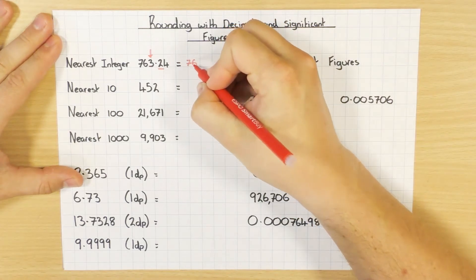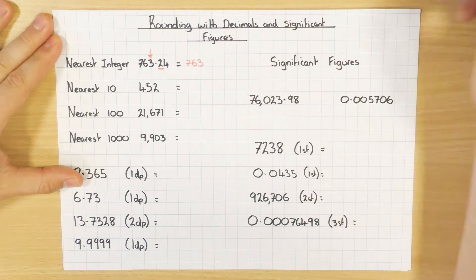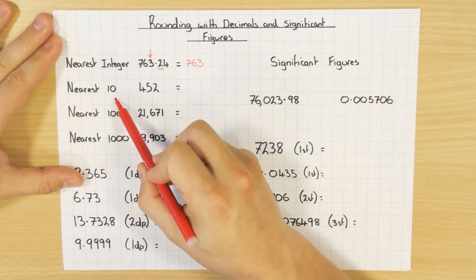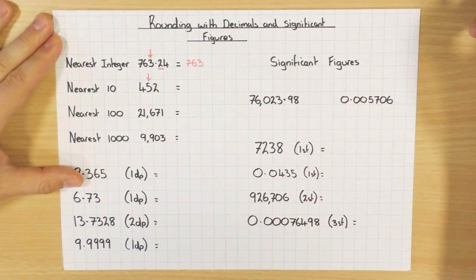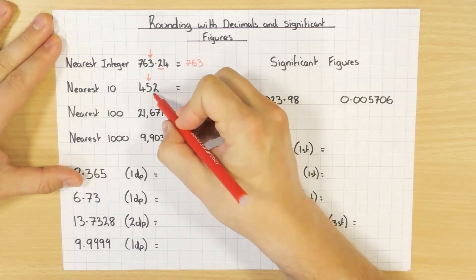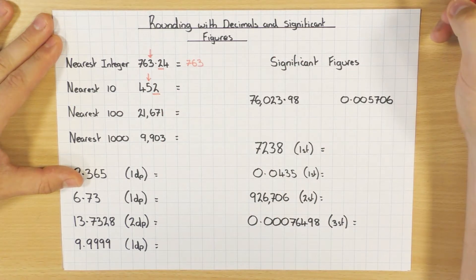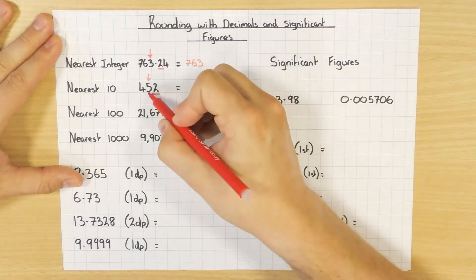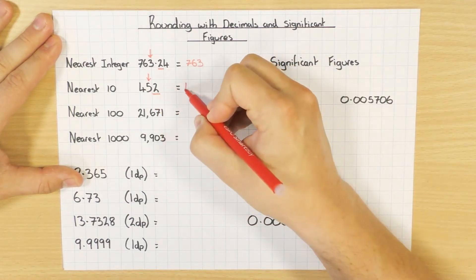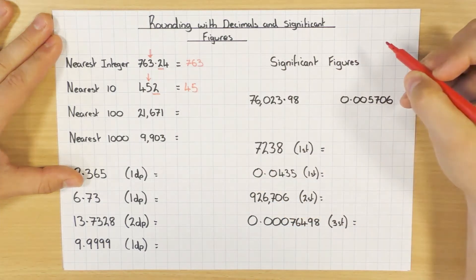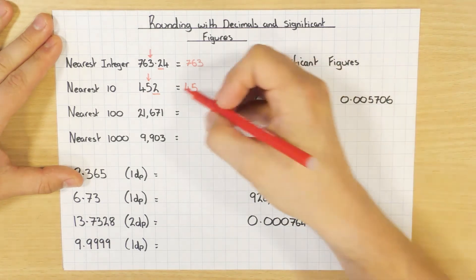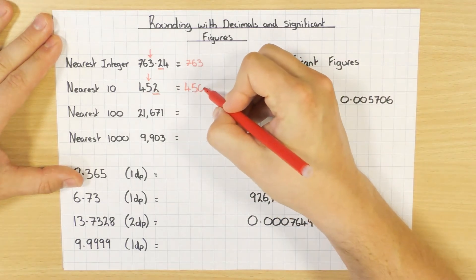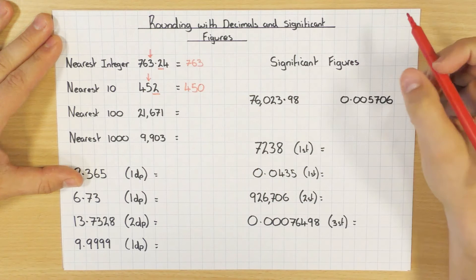Next one: round to the nearest ten. I put an arrow over the tens column — the five in this case. I look at the next digit, which is a two, so I round down, meaning it stays the same. The four and the five stay the same. Rounding 452 to 45 would be silly, so we just add a zero, giving 450.